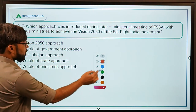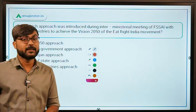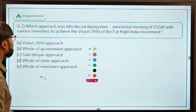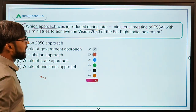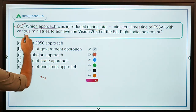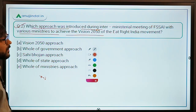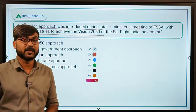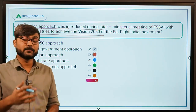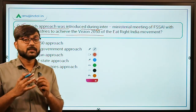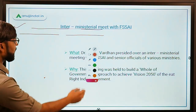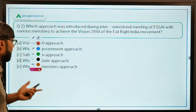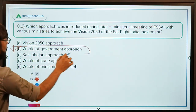Question number two is also very important because it talks about the Vision 2050 of the Eat Right India movement of FSSAI — an important part from the social issues topic. Which approach was introduced during the inter-ministerial meeting of FSSAI with various ministries to achieve Vision 2050 of the Eat Right India movement? The correct answer is Option B: the Whole of Government Approach.